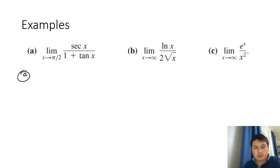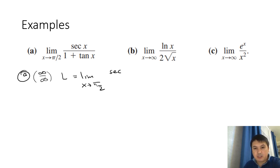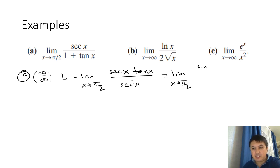Example A: lim x→π/2 of sec(x)/(1 + tan x). As x→π/2, sec blows up and 1+tan blows up, so this is ∞/∞. Applying L'Hôpital: derivative of sec x is sec x · tan x; derivative of 1 + tan x is sec²x. The sec x cancels with sec²x leaving tan x / sec x = sin x / cos x · cos x = sin x. The limit of sin x as x→π/2 is sin(π/2) = 1.